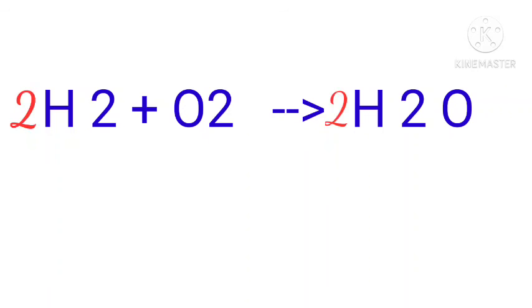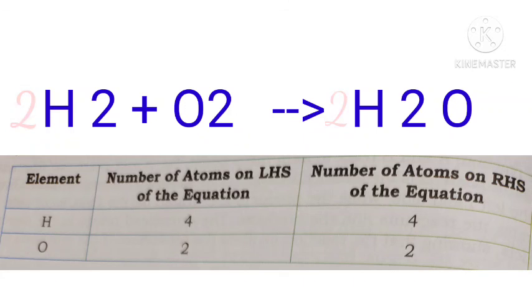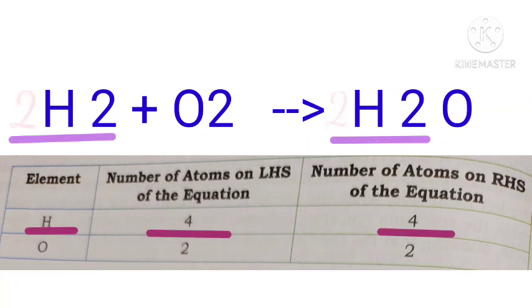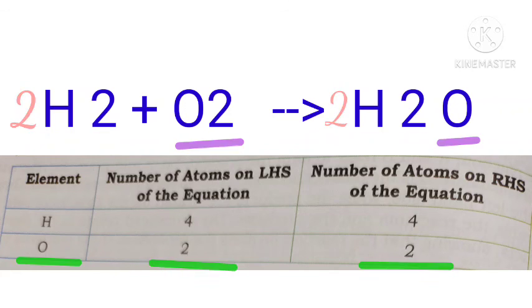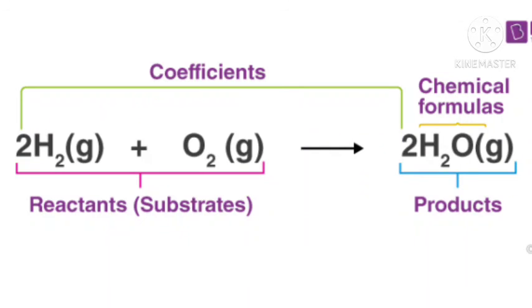Now the number of atoms of each element present on both the sides of the equation are the same as shown in the table. So we can check here H having 4 number of atoms on the left hand side and on the right hand side. Oxygen having 2 atoms on the left hand side as well as on the right hand side. Hence the equation is now balanced.